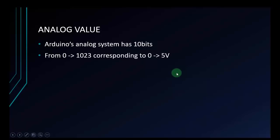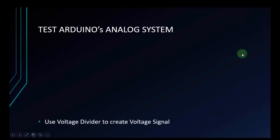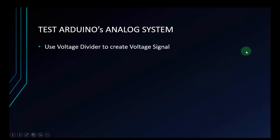When you input a voltage signal in the range from 0 to 5 volts, the Arduino will convert it to a number from 0 to 1023 in decimal. Now we will test the Arduino analog system. Before we do that, we have to calculate the analog value when we transfer an input from 0 to 5 volts to the Arduino. I will use a voltage divider to create a voltage signal.